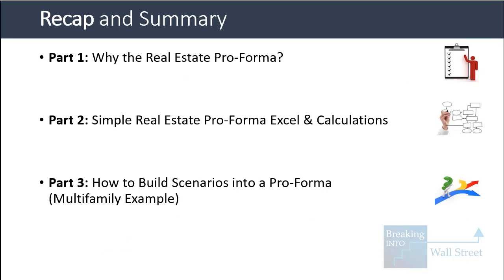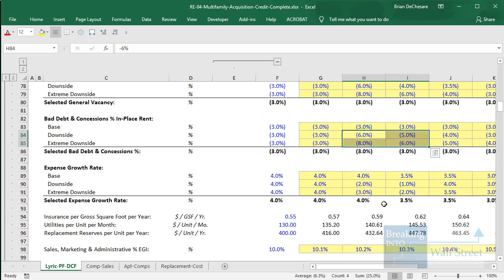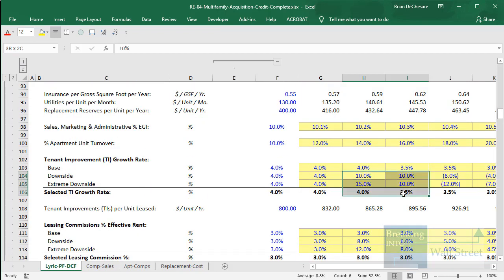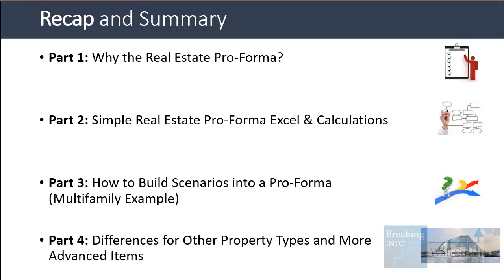When incorporating scenarios into a pro forma, the key is that everything is interconnected. If we assume a recession where rents fall, the vacancy rate should also rise, bad debt should rise, expenses should grow at a slower rate, and TIs and LCs should rise at a higher rate as it gets harder to find tenants. When there's a recovery, all those numbers should reverse back to normal. The hotel pro forma is much closer to a normal company's financials, and advanced items like loss to lease and percentage rent can also appear.